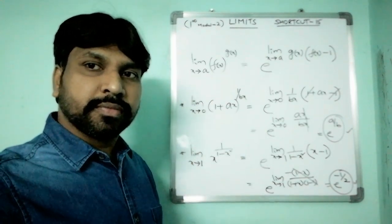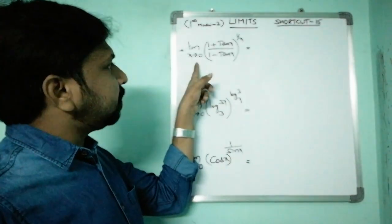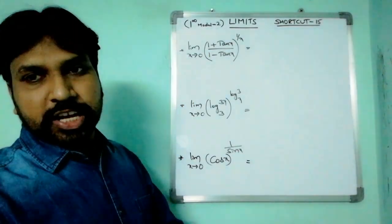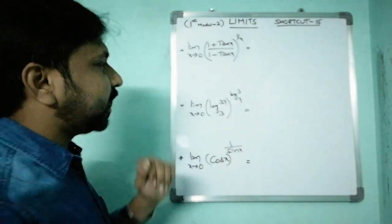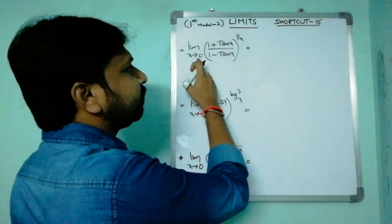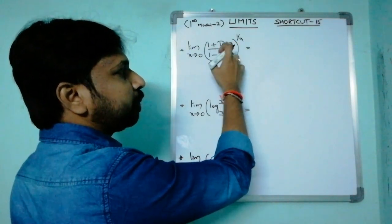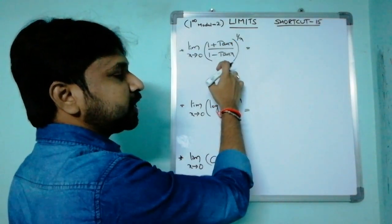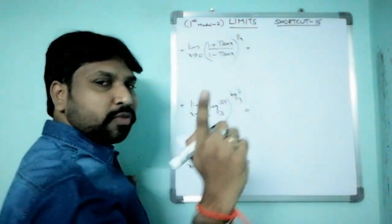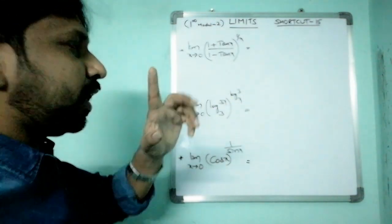Next example: limit x tends to 0 of ((1+tan x)/(1−tan x))^x. Check the form: substituting x = 0 gives (1+0)/(1−0) = 1, and the power is 1/0 = ∞. So this is the 1^∞ model and we can apply the formula.